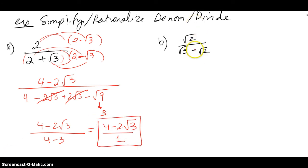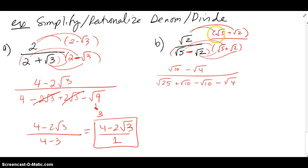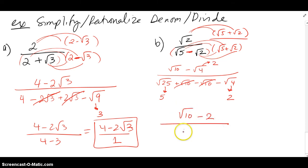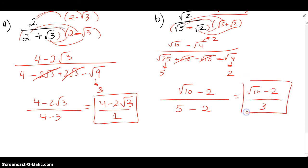Part B uses the same idea but with a minus in the middle, so I multiply by the conjugate with a plus. After distributing, all terms are radicals that merge. √5 squared pops out a 5, √2 squared pops out a 2, the middle terms cancel, and I get √10 minus 2 upstairs and 5 minus 2 downstairs. That gives √10 minus 2 all over 3.